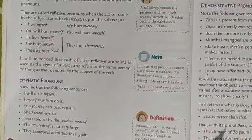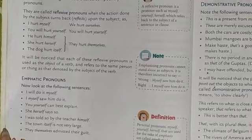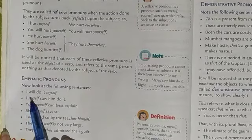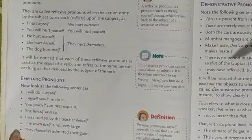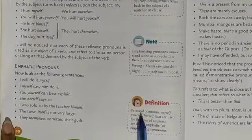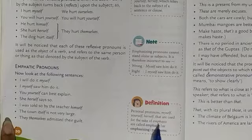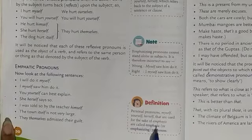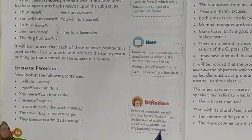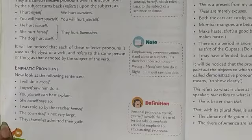The next one we are going to cover is emphatic pronoun. Emphatic pronoun is a little bit related to reflexive pronoun. Personal pronouns like myself, yourself, and herself that are used for the sake of emphasis are called emphatic or emphasizing pronouns — they emphasize or focus on something.